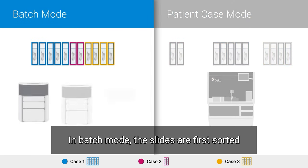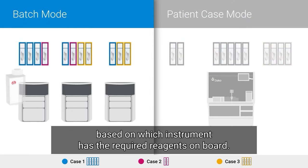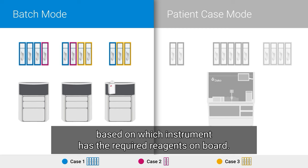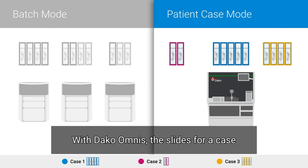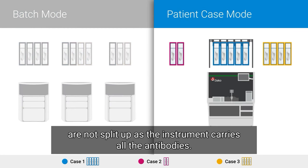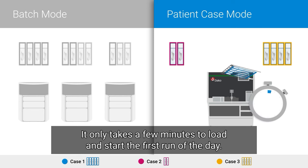In batch mode, the slides are first sorted based on which instrument has the required reagents on board. With DACO-OMNIS, the slides for a case are not split up as the instrument carries all the antibodies. It only takes a few minutes to load and start the first run of the day.